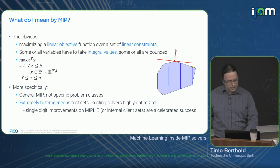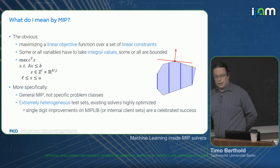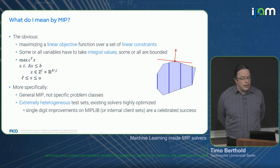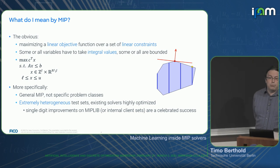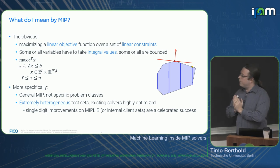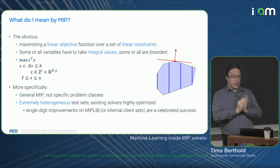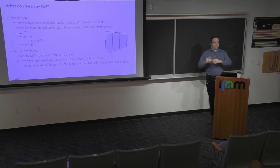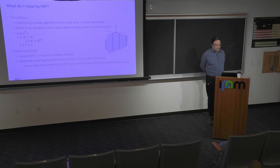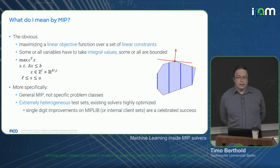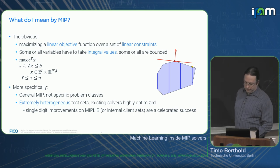Mixed integer programming — we're talking about maximizing or minimizing a linear objective function over a set of linear constraints, where some or all of the variables should take integer values. In this presentation, I will talk about general MIPs. We don't consider particular classes like knapsack or set covering. We would usually use something like MIP-lib — extremely heterogeneous test sets — and the solvers we use are already highly optimized, so we will only see small improvements, but those would be counted as a big success.